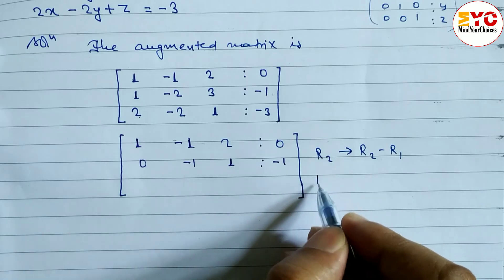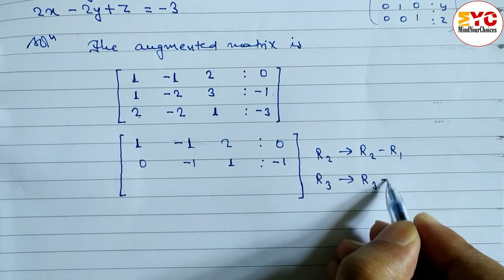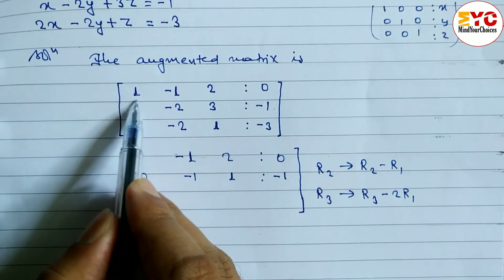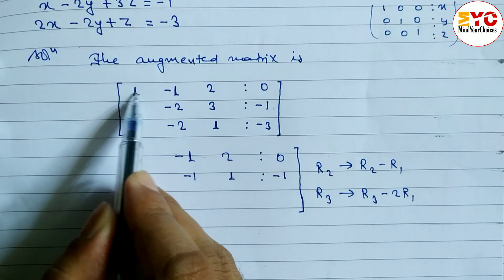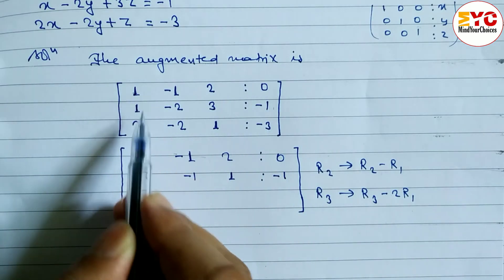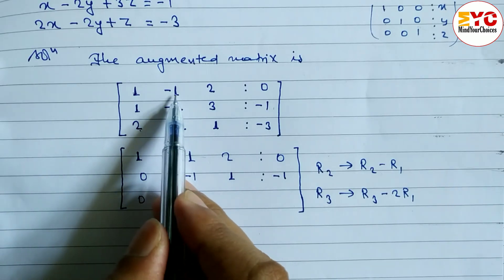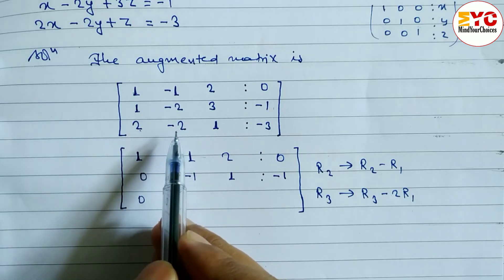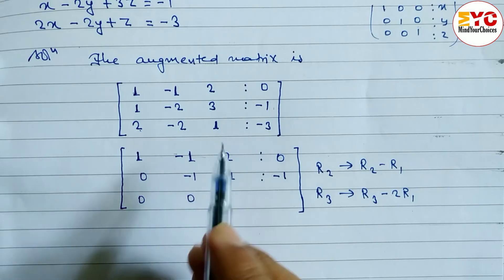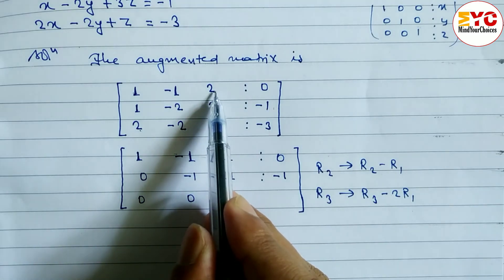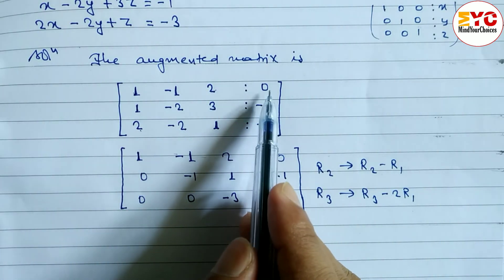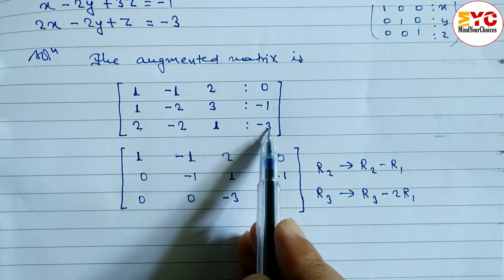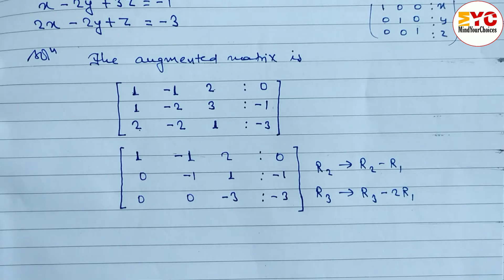Now we apply R3 → R3 - 2R1 to convert the 2 in column 1 of row 3 to 0. Multiplying R1 by 2: 2, -2, 4, 0. Subtracting from row 3: 2-2=0, -2-(-2)=0, 1-4=-3, and -3-0=-3. So the new third row is 0, 0, -3, -3.